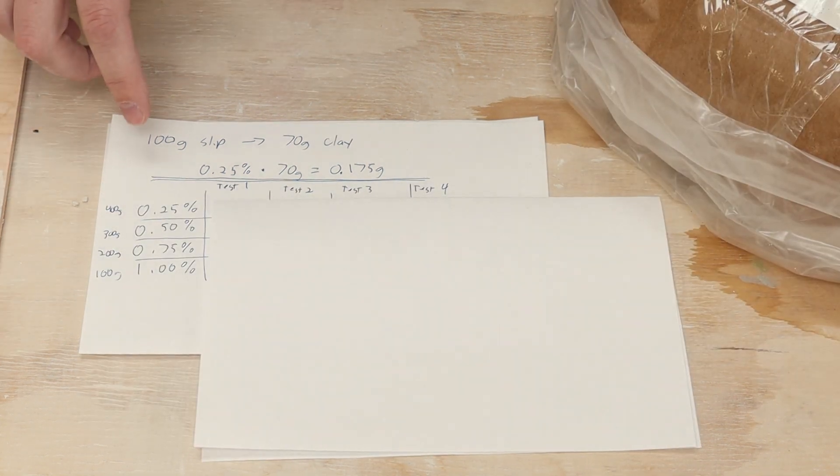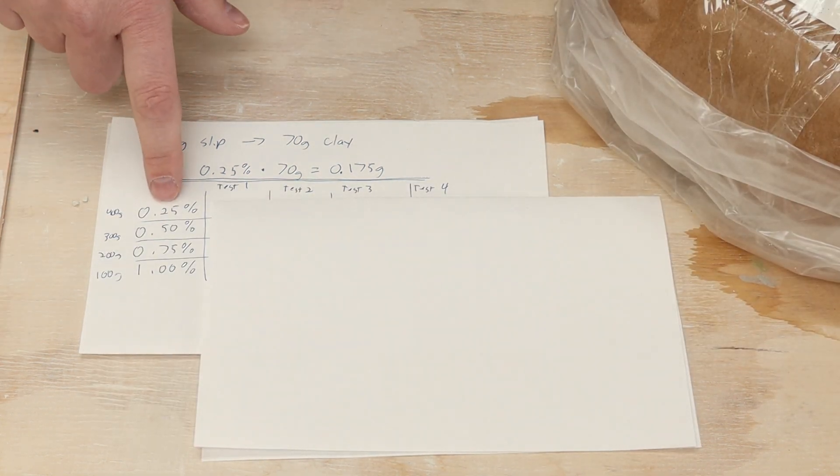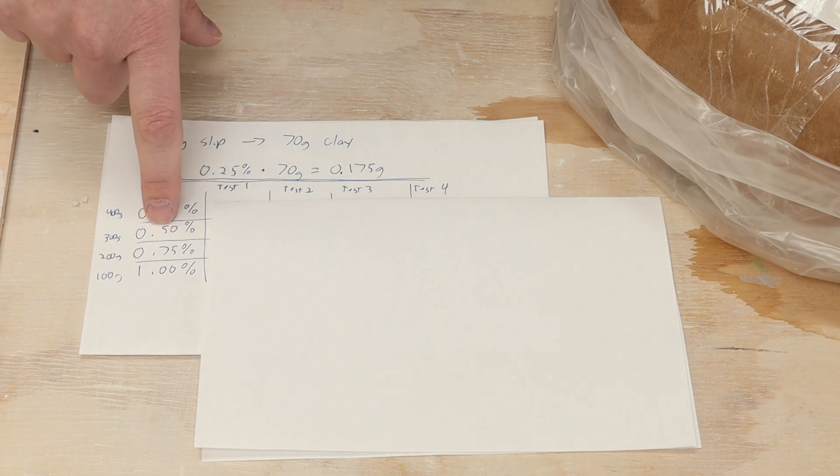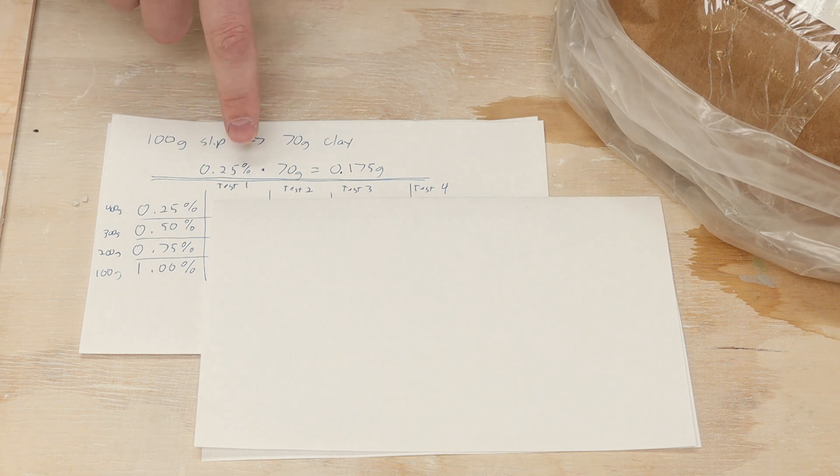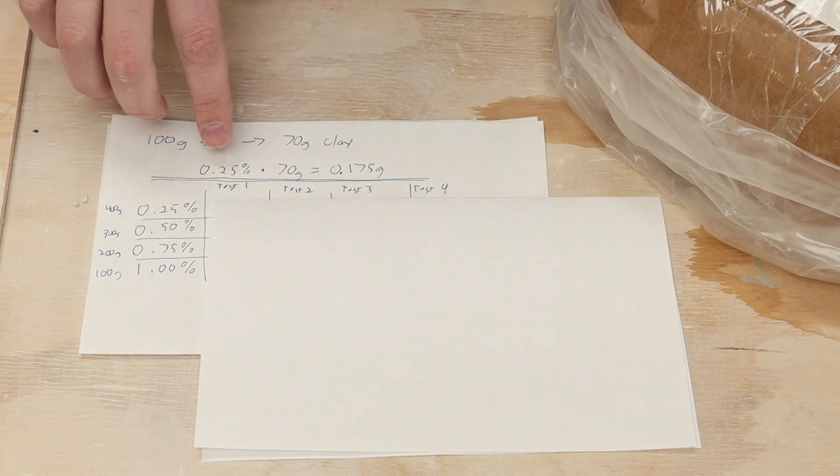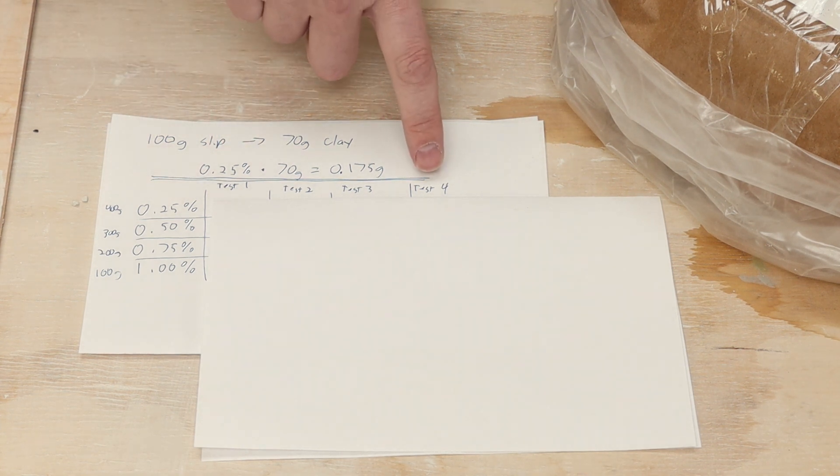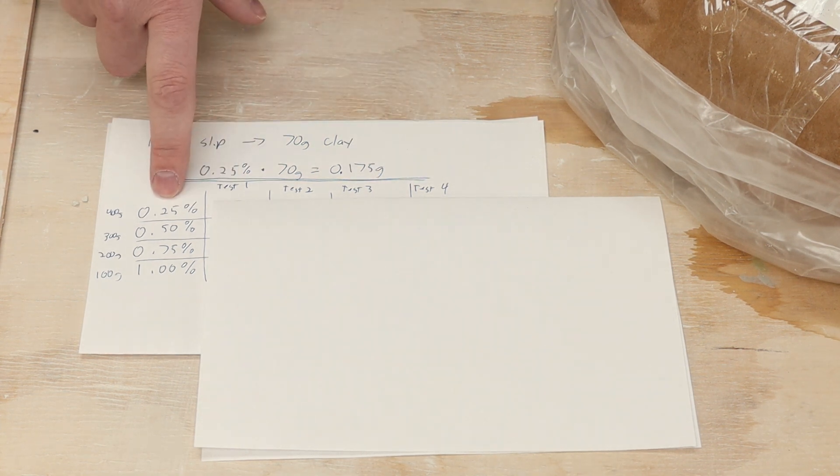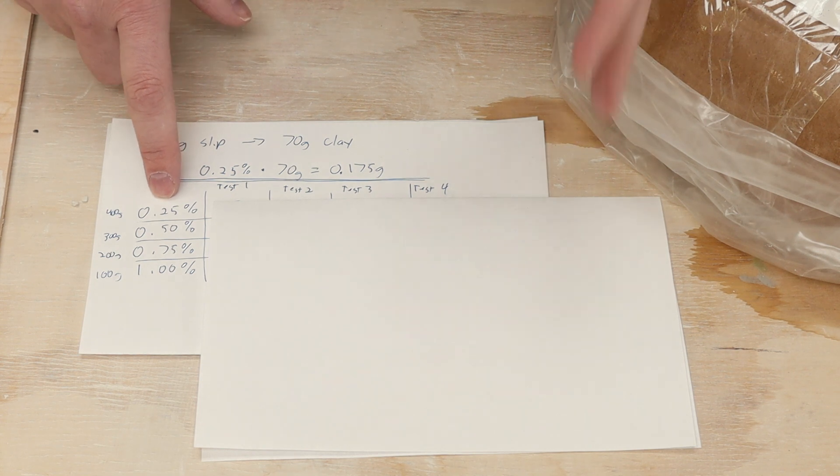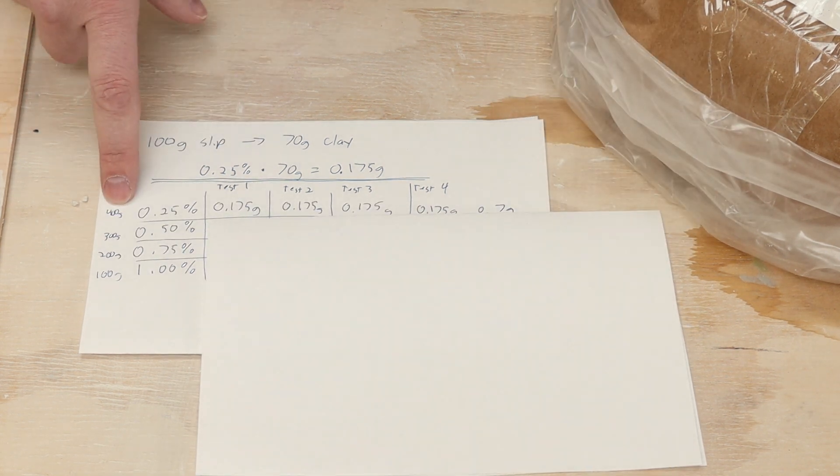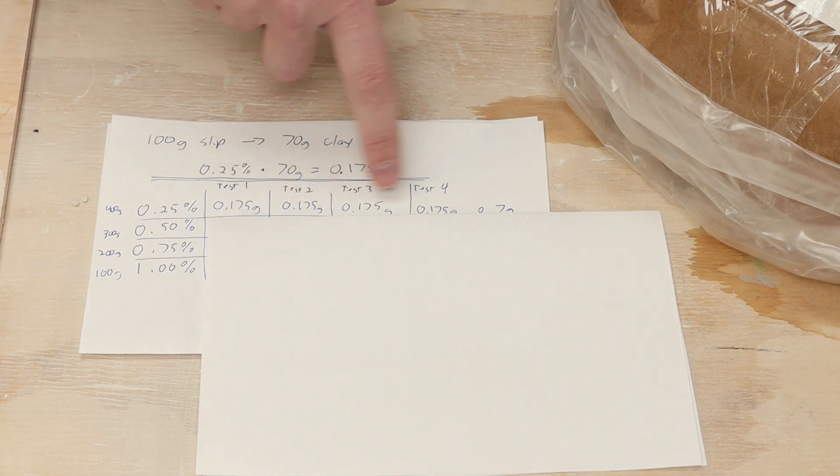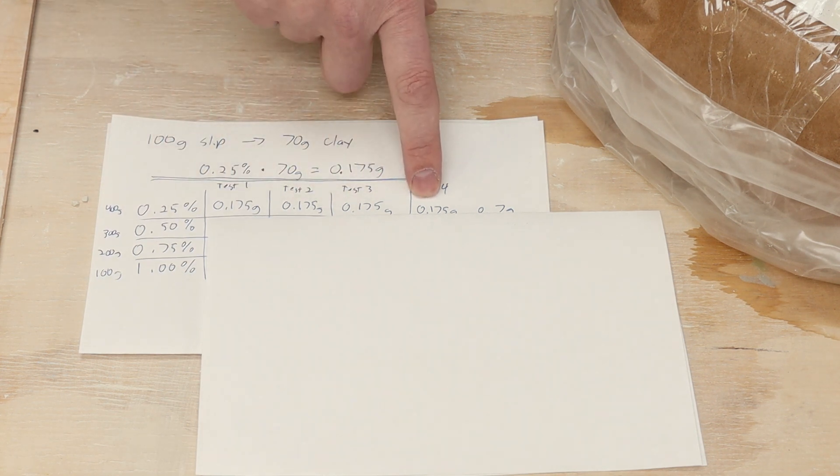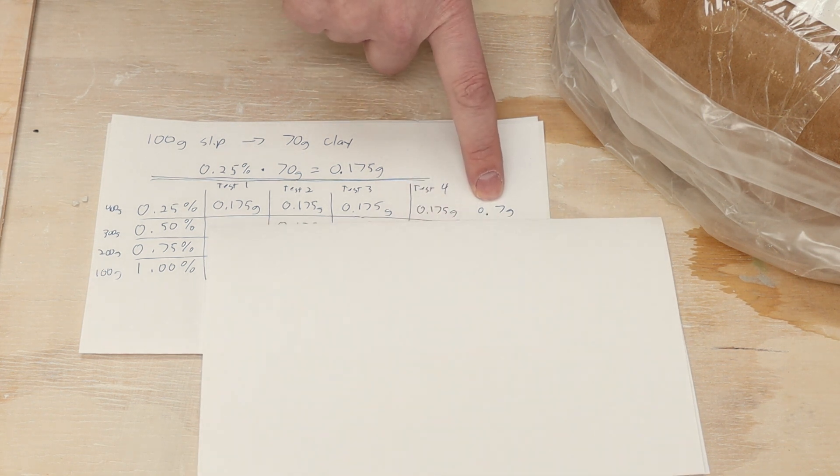So I don't want to test just one percentage. I actually want to test four. So I'm going to test 0.25, 0.5, 0.75, and 1 percent even. And so I'm going to do that across four different test tiles. So to start with, I'm going to mix up a batch of slip that is enough for four test tiles but only at 0.25 percent. So I'll have 400 grams of slip and I will then have for the four test tiles 0.175 grams each. So that's 0.7 grams total.